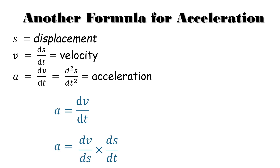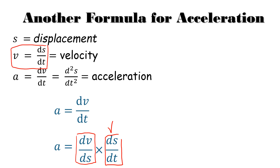We can rewrite acceleration as (dv/ds) × (ds/dt). The ds on the bottom and ds on the top cancel, leaving us with dv/dt — the same thing. The benefit is that dv/ds lets us differentiate velocity with respect to displacement, taking time out of the equation. Since ds/dt is just velocity, we can write acceleration as v dv/ds — an equation independent of time. This is helpful when we want to talk about acceleration over a distance and change in velocity, without caring about time.